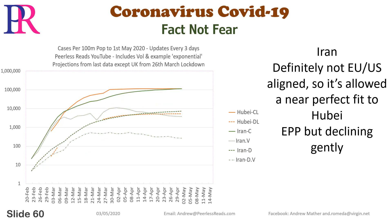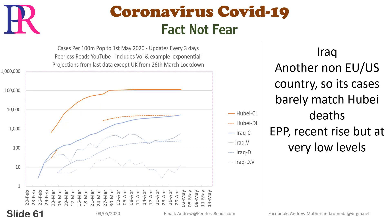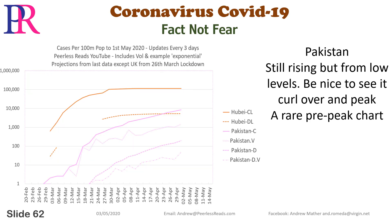Iran: definitely not EU-US aligned, so it's allowed a near-perfect fit to Hubei. EPP but declining gently. Iraq: another non-EU-US country, so its cases barely match Hubei deaths. EPP, recent rise but at very low levels. Pakistan: still arriving but from low levels — be nice to see it curl over and peak. A rare pre-peak chart.